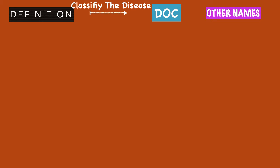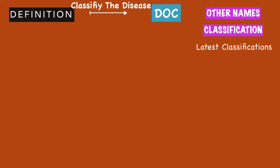Knowing the other name is a significant thing that will improve your grades. For example, the other name of Paget's disease is osteitis deformans — this helps the examiner understand that you have good knowledge of the subject. Also, if there is any available classification for the disease, write that here. Writing the latest classification will help you fetch more marks.